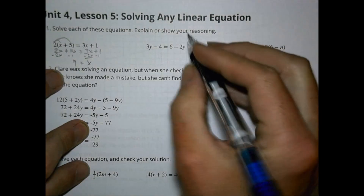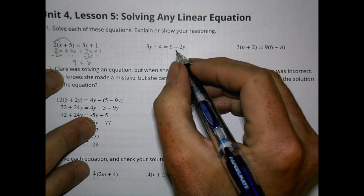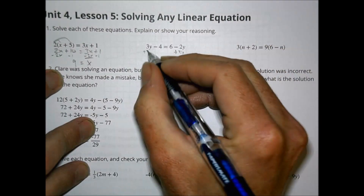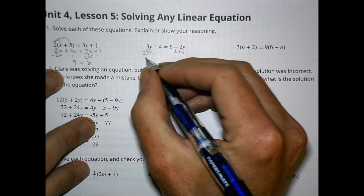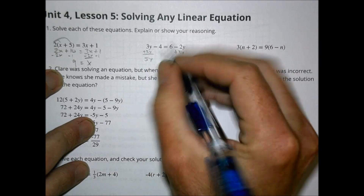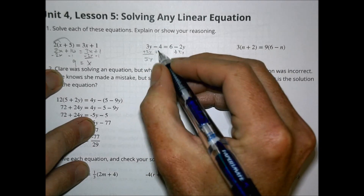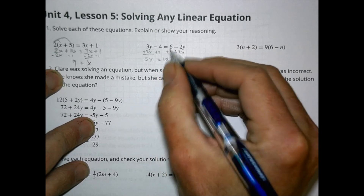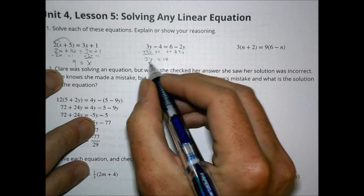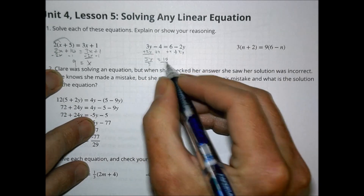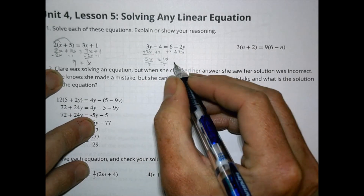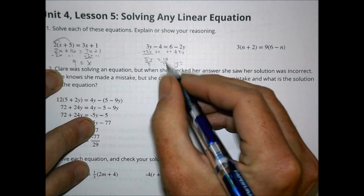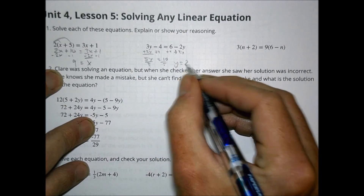For the next equation, I'll add 2y to both sides to get 5y, then add 4 to both sides so 5y equals 10. Dividing both sides by 5, y equals 2.